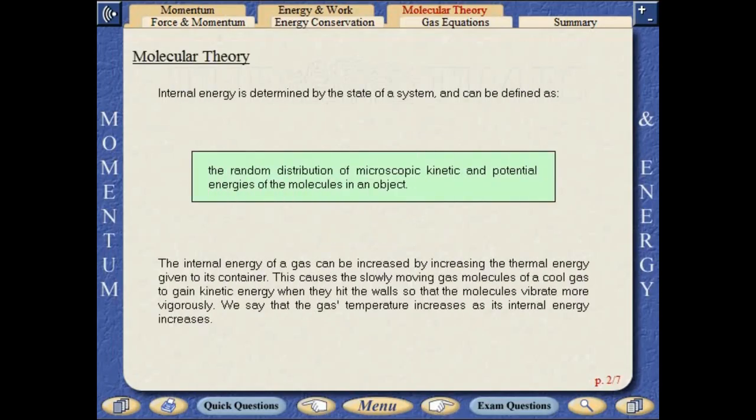Internal energy is determined by the state of a system, and can be defined as the random distribution of the microscopic kinetic and potential energies of the molecules in an object. The internal energy of a gas can be increased by increasing the thermal energy given to its container. The slowly moving gas molecules of a cool gas will gain kinetic energy when they hit the walls, so that the molecules vibrate more vigorously. We say that the gas's temperature increases as its internal energy increases.